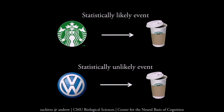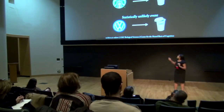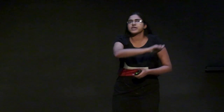We observed something very interesting. Whenever the monkey saw something that was statistically likely — something that conformed to the regularities imposed during training — we found that the activity of the neurons was suppressed. But when the monkey saw the same image in a context where it was statistically unlikely, for example the Volkswagen symbol followed by the coffee cup, a visual event the monkey had never seen during training, we found that the activity of the same neurons for the same image was enhanced.